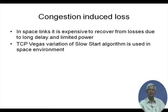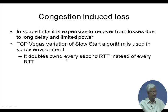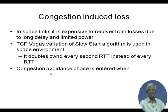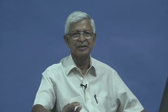The TCP Vegas variation of the slow start algorithm doubles the congestion window (CWnd) every alternate RTT instead of every RTT, so it grows more slowly. The congestion avoidance phase is entered by measuring throughput reduction — when throughput begins to taper rather than increase, that signals congestion, unlike standard TCP which uses the ssthresh comparison.